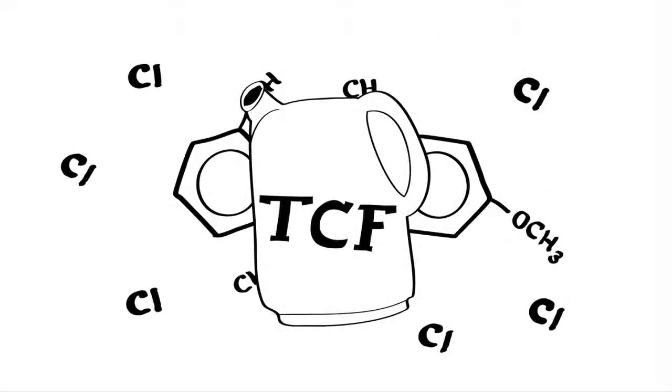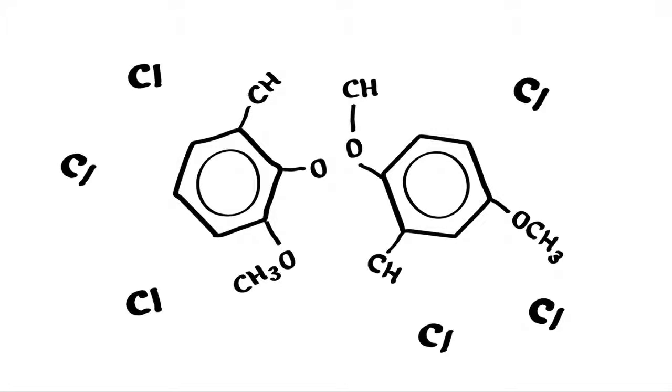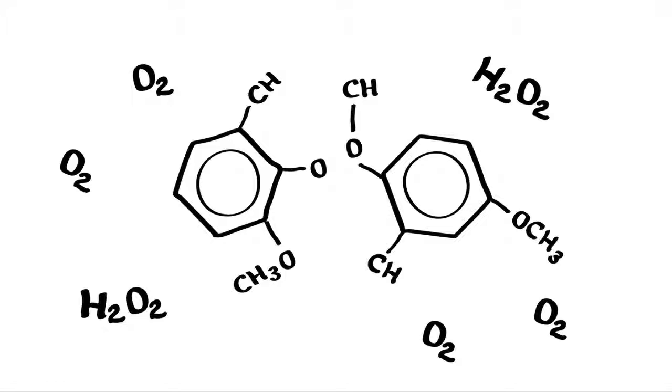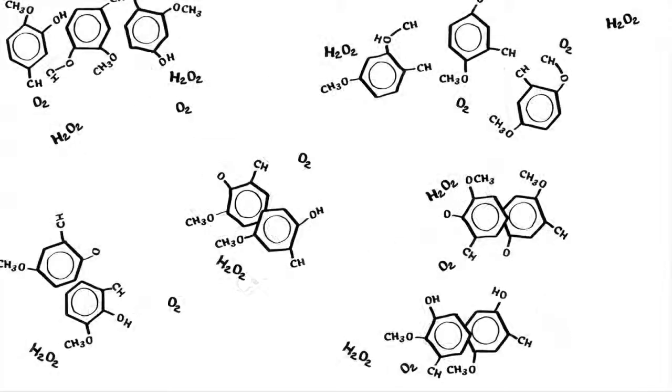Totally chlorine-free bleaching, known as TCF bleaching, is an approach that replaces all chlorine-based bleaching agents with oxygen-based bleaching agents such as hydrogen peroxide and oxygen. This approach eliminates the inadvertent production of chlorinated compounds during bleaching.